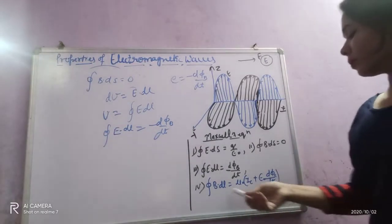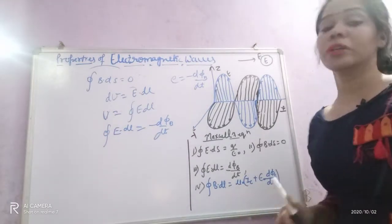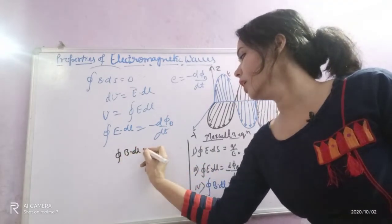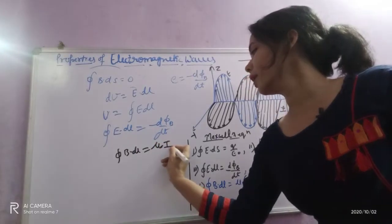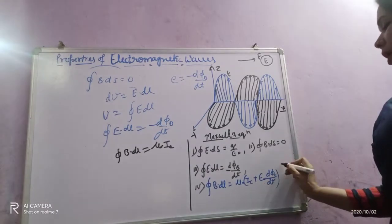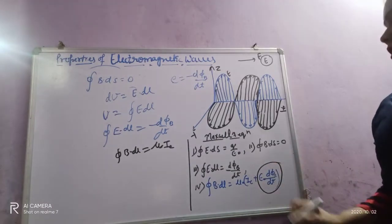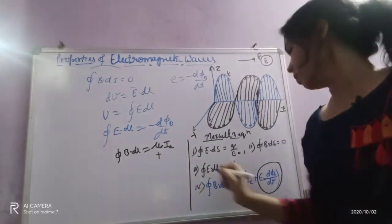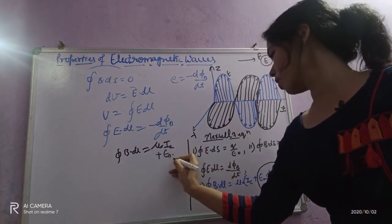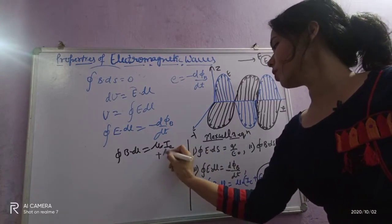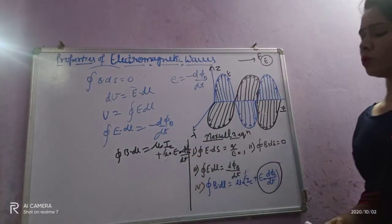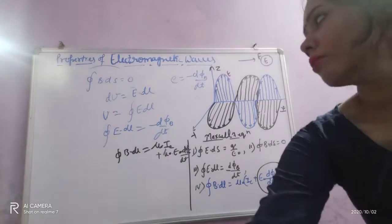The last one is Maxwell's fourth equation, which is the modified Ampere's circuital law. Earlier, you studied that ∮B·dl = μ₀I_conduction, where I_conduction is the current through any conductor. But Maxwell added an additional term: μ₀ε₀(dΦE/dt), which is known as the displacement current. Note that the derivation of displacement current has been removed from your syllabus this year.